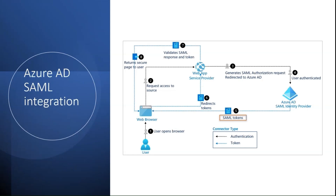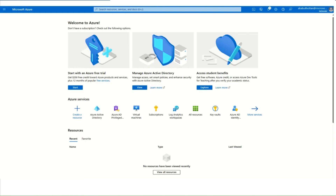These SAML tokens are signed with the unique certificate that is generated in Azure Active Directory and by specific standard algorithms. In this video, we will see how to create and activate a certificate.